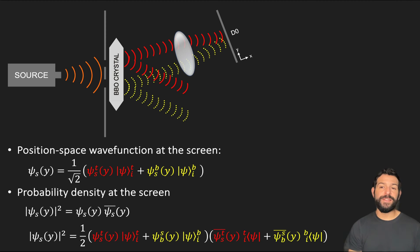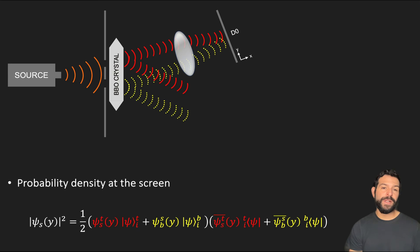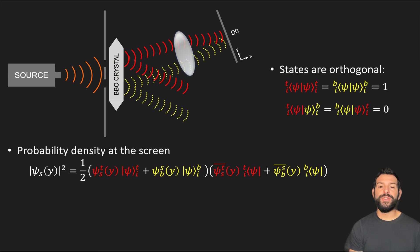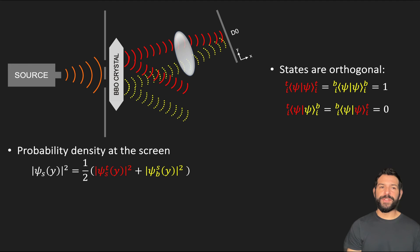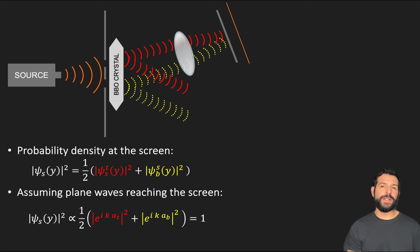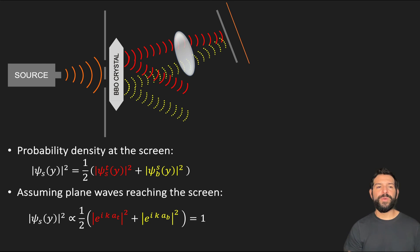Recognizing that since the purpose of the information photon is to identify which slit the source photon passed through, its corresponding states are orthogonal to each other, causing the cross terms in the probability density function to vanish. If we now assume we're dealing with plane waves reaching the screen, just like we did in the video for the double-slit experiment, we get that the probability density is proportional to a constant value, which is indicative of no interference pattern irrespective of what we do with the information photon.